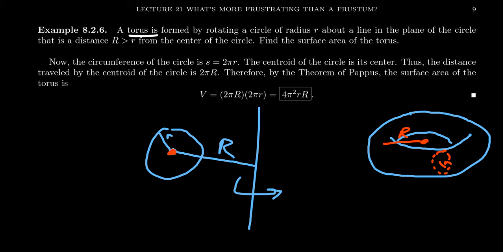The centroid here, as it travels around this whole thing, the circumference of that thing as the centroid travels around is going to be 2π capital R.